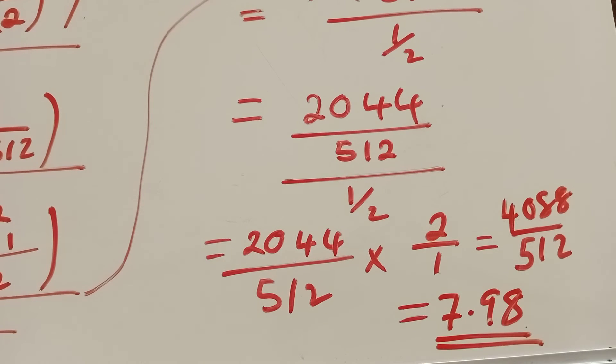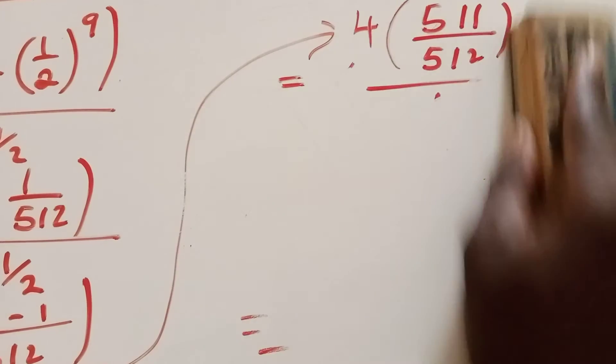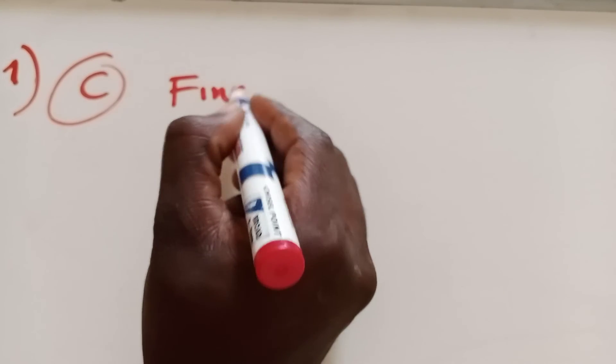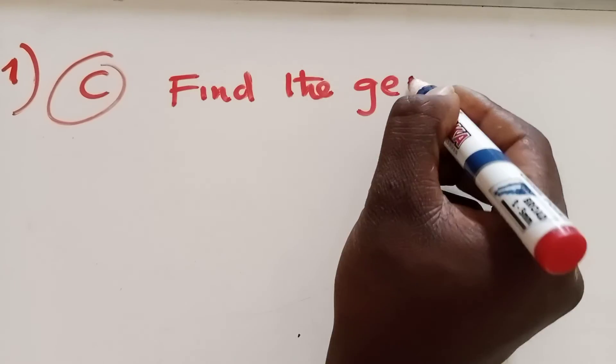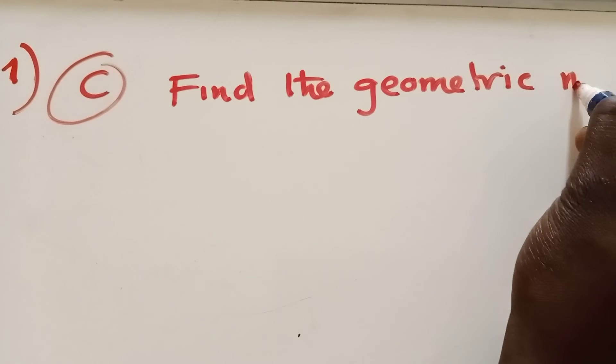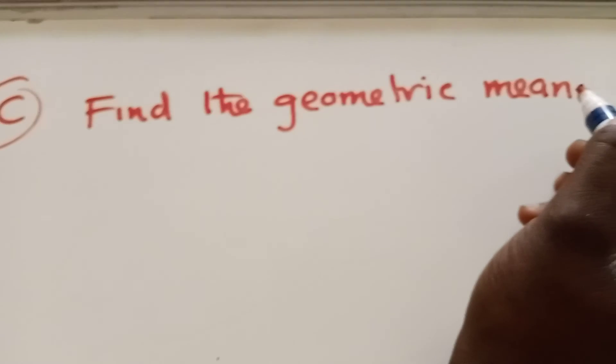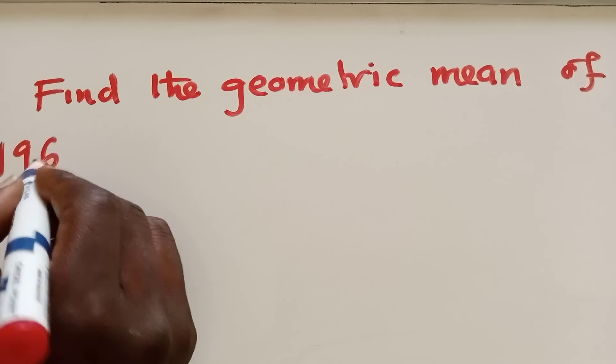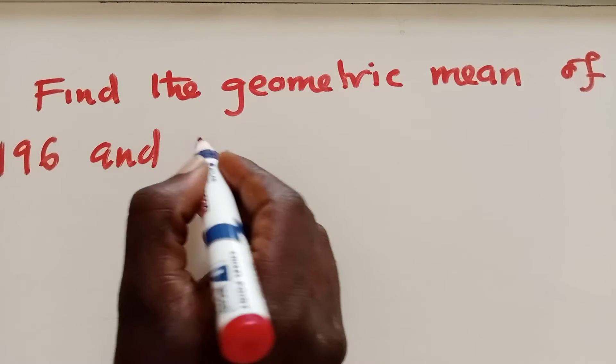The last question of question 1, 2021 GCE. Let me clean up. So the last question here, which is question C, was to find the geometric mean. So we're asked to find the geometric mean. This is still question 1 C. So they said find the geometric mean of 196 and 156.25.